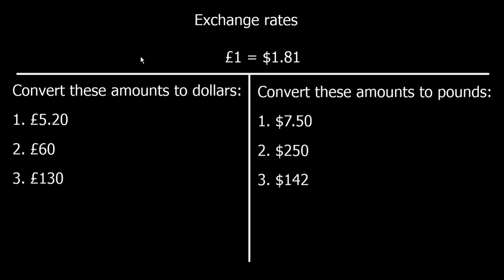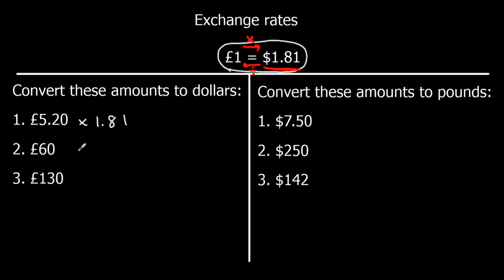This next question is harder, because we're going to have to use a calculator — that's the only reason it's harder. The key number in the exchange rate is the one that's not 1: 1.81. So from pounds to dollars, going forwards, we're going to times. Going backwards, we're going to divide by this number. So £5.20 times 1.81, and going back from dollars to pounds, divide by 1.81.